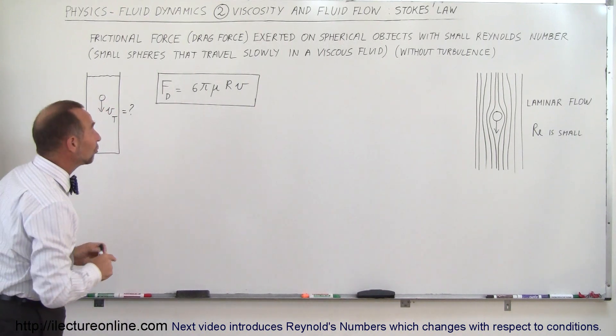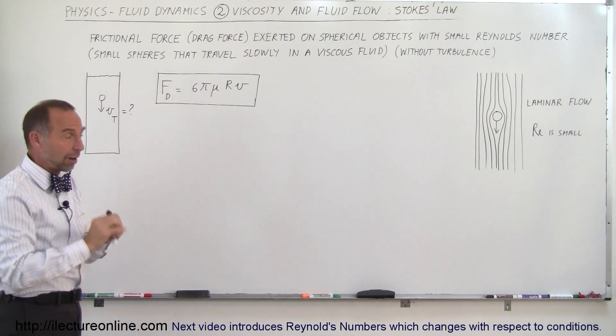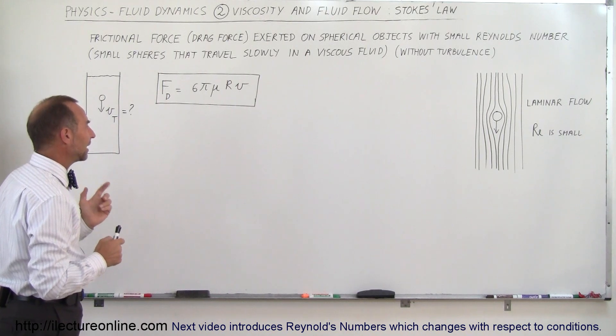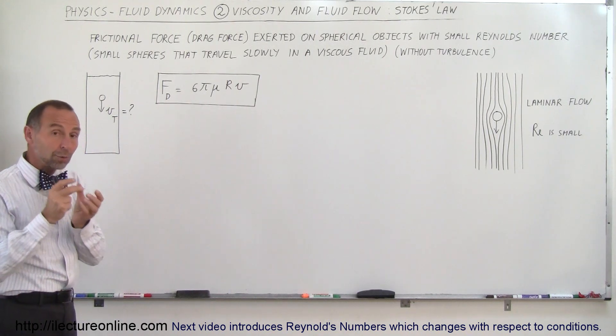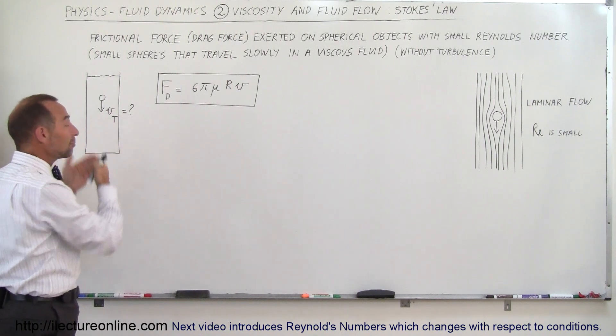Now what we can do with this equation is we can find out what the terminal velocity will be of a circular object like a bead or a marble or something like that moving through a fluid. And so we can say that at the time that the marble reaches terminal velocity, the net force on the object should be zero.